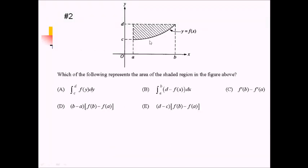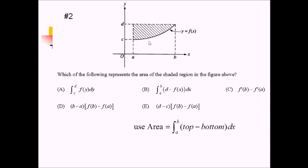On this problem, we're given a graph with some abstract labels. We want to know which choice represents the area of the shaded region. Since we're doing area, we use integrals from A to B with top minus bottom in the integrand — top function minus bottom function. We have to think of it as top minus bottom because there are no absolute values to cover up that mess. So the area equals the integral from the leftmost x-value to the rightmost x-value, from A to B.